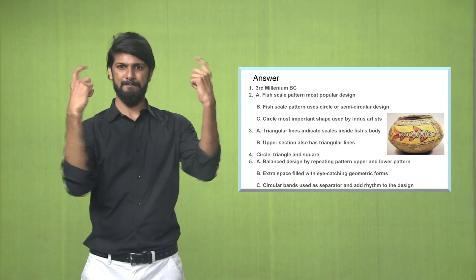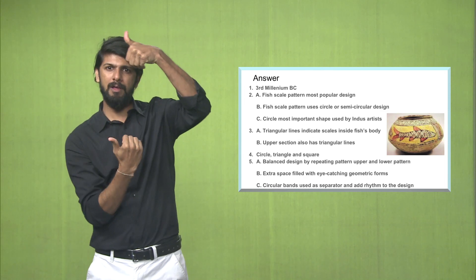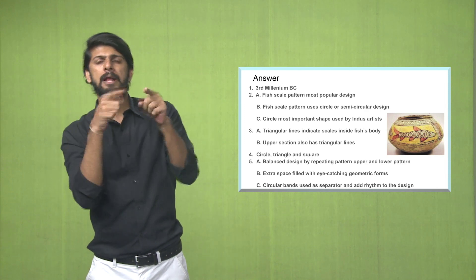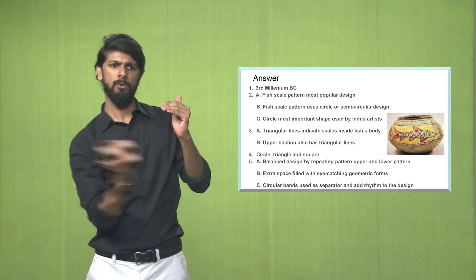Point C, the circular bands which are made in black are used as a separator and to add a kind of a rhythm to the design.